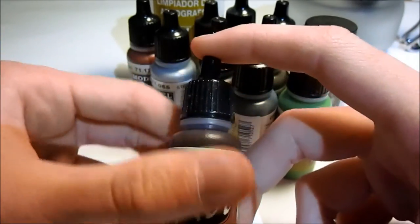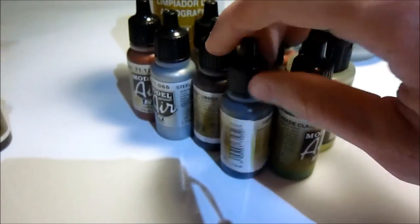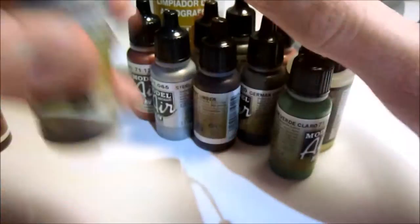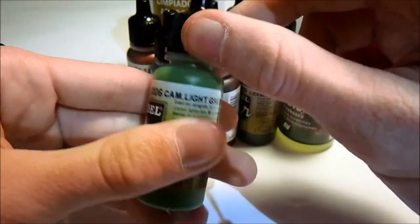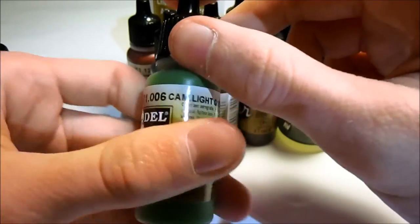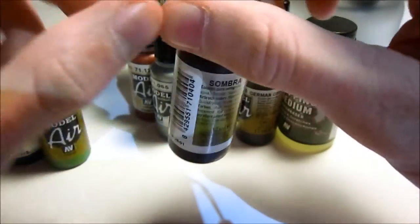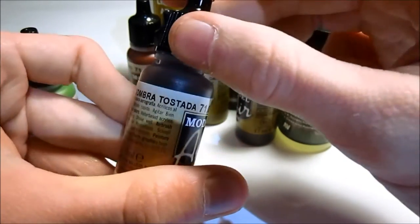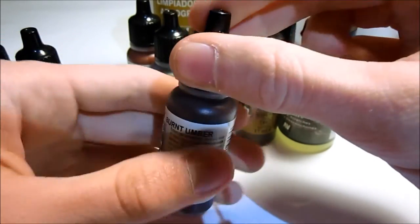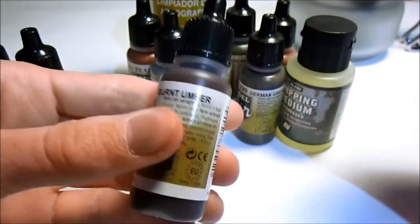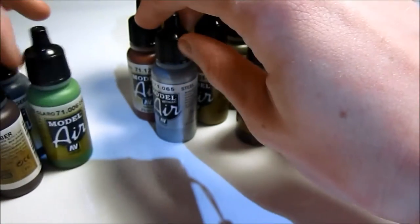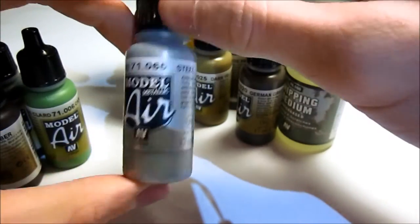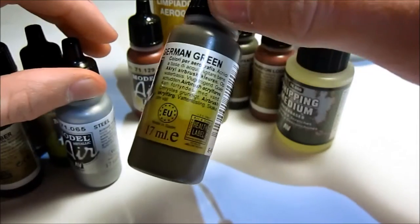Burnt amber, no idea for what the purpose of that is. I have no idea what parts I can paint with that. Some steel, German green, and again no idea what parts are supposed to go in this color or what this color is used for.